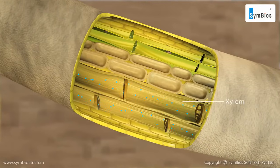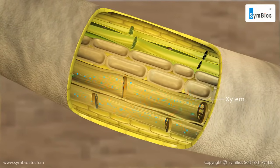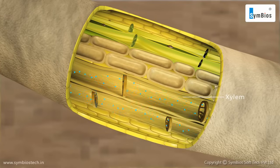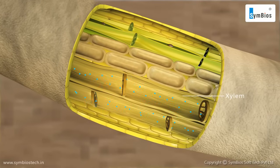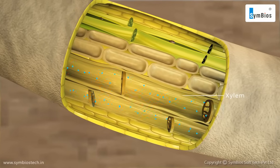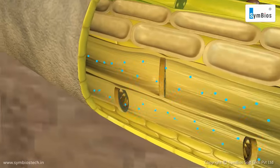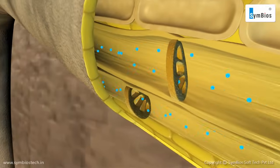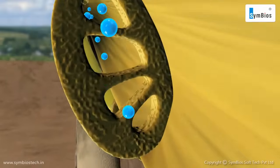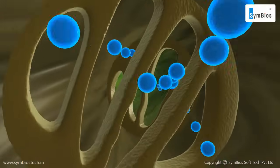Xylem vessels are long, narrow, hollow tubes containing no living material. The xylem transports water and soluble mineral nutrients from the roots to other parts of a plant.